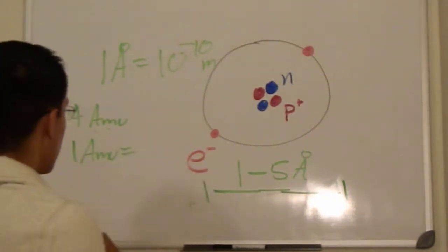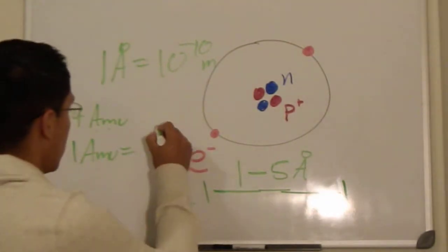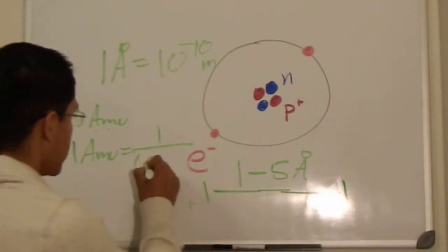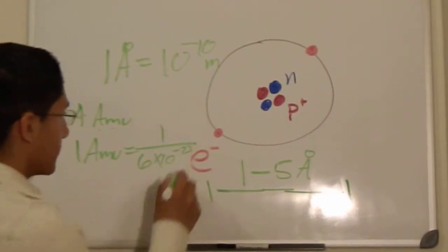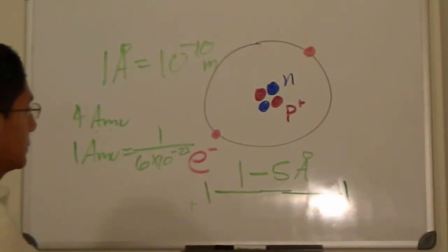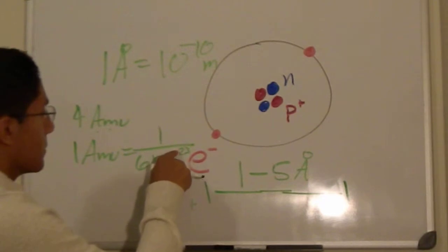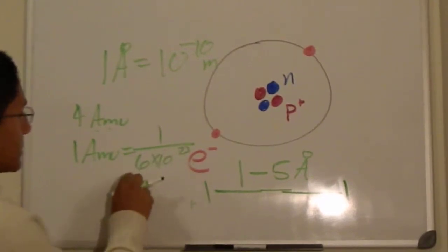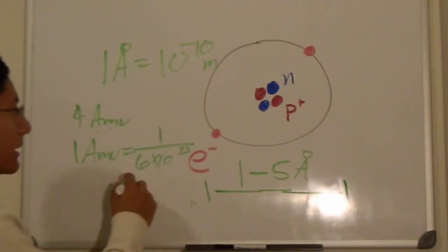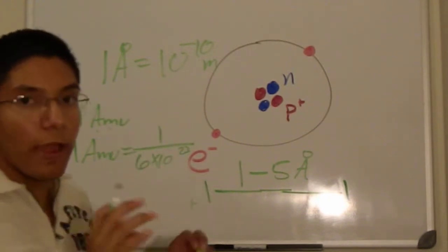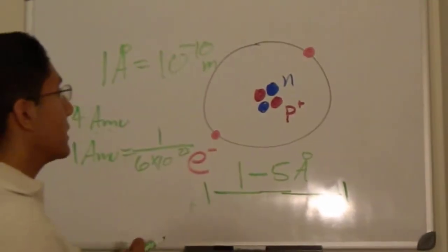And one atomic mass unit is equal to 1 divided by 6 times 10 to the 23rd power. I'm sorry, I'm messing up, 6 times 10 to the 23rd power. 1 divided by that number. Incredibly small, incredibly light.